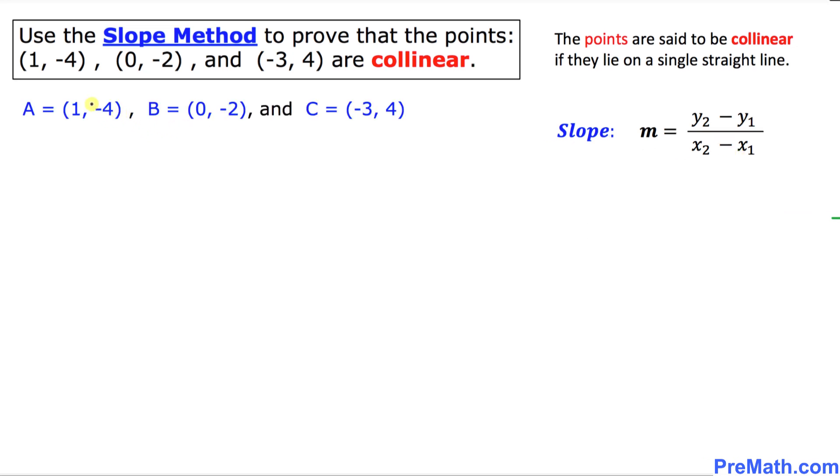And here I have given these points a name. A is (1, -4), and point B is (0, -2), and C is point (-3, 4).